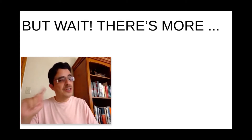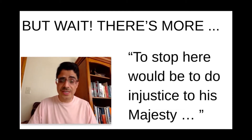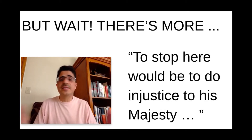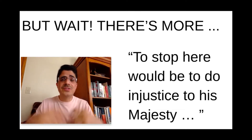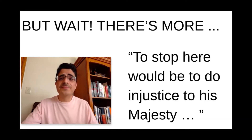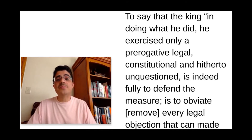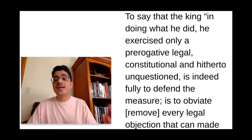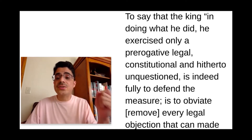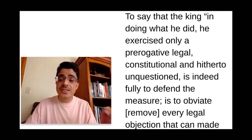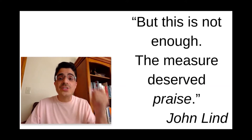But there's more. John Lind says that if he were to just stop there, that would be to do injustice to his majesty — in other words, that could end the argument, but he's not going to stop there. We don't want to do injustice to even a dead king, so we'll go ahead and let him finish his argument. Not to say that the king in doing what he did exercised only a prerogative — legal, constitutional, and hitherto unquestioned — is indeed fully to defend the measure, is to obviate every legal objection that can be made against it. But this is not enough. The measure deserves praise.